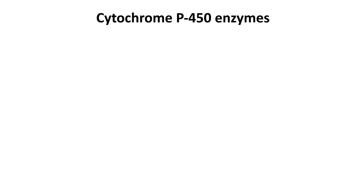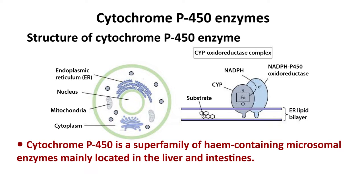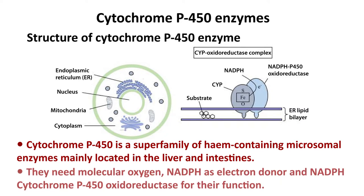Cytochrome P450 is a superfamily of heme-containing microsomal enzymes mainly located in the liver and intestines. They need molecular oxygen, NADPH as electron donor, and NADPH cytochrome P450 oxidoreductase for their function.